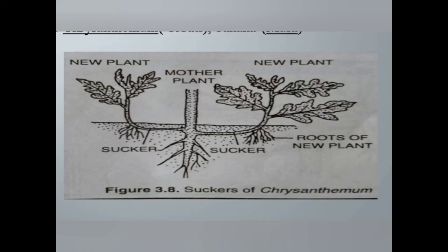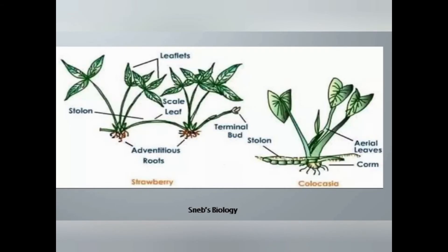The difference between suckers and stolon is that transverse connection: in case of sucker the transverse connection remains underground, so we don't see any connections. In case of stolon it remains above the ground, so we distinctly see the loop-like connections between the plants.